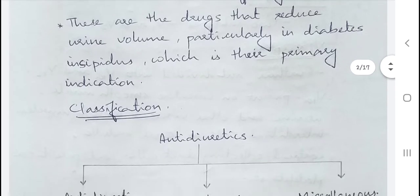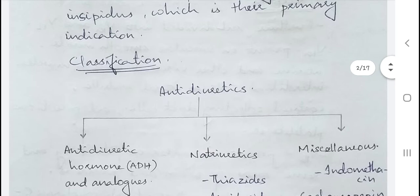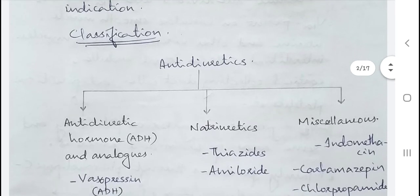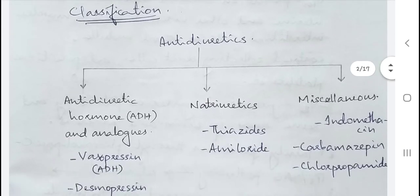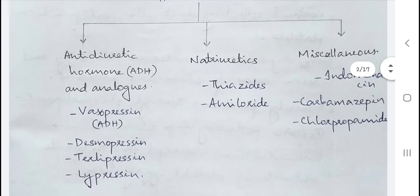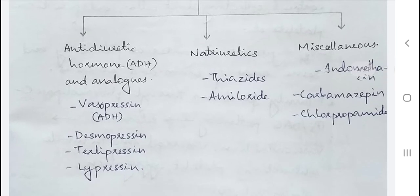The classification of anti-diuretics: they are classified into anti-diuretic hormone and its analogs, natriuretics, and miscellaneous drugs. Anti-diuretic hormone is ADH or vasopressin, and the analogs are desmopressin, terlipressin, and lypressin. Natriuretics include thiazides and amiloride, and miscellaneous drugs include indomethacin, carbamazepine, and chlorpropamide.